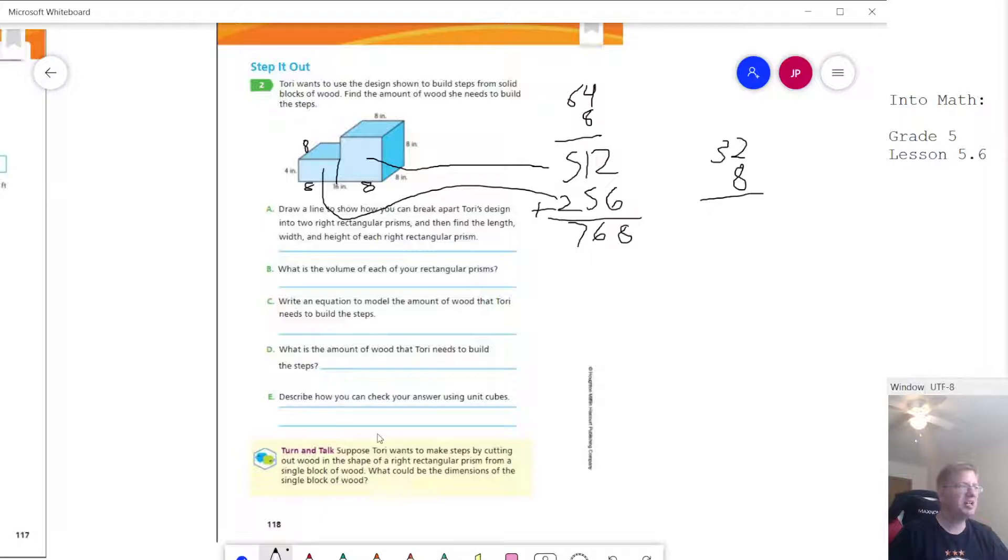If we wanted to check our answers using unit cubes, we would be here for a while. We would need 768 of those potentially, for saying that each one of those is worth one cubic inch. And so we're going to need 768 cubic inches to complete that.